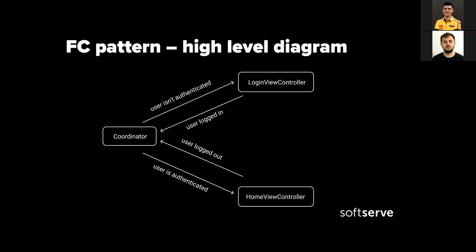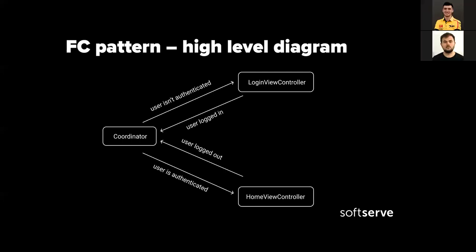This is a high-level diagram of how a coordinator works with two view controllers. When the app is launching, we have our coordinator which checks the app's state — if the user has logged in or not. If the user isn't authenticated, the coordinator presents the login view controller; if the user is authenticated, it presents the home view controller. When a user is in the login view controller and successfully logs in, they notify the coordinator — essentially saying 'I'm done, do something about it.' The coordinator checks if login was successful and if so presents home. From the home view controller, we can also log out and notify the coordinator about these changes.